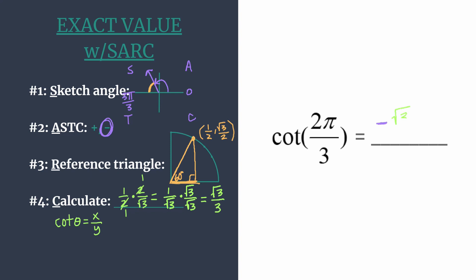And you get a rationalized final value of square root of 3 over 3. So, of course, we've already decided that it should be negative since cotangent is negative in the second quadrant. And we found that the cotangent of 2π over 3 is negative root 3 over 3.